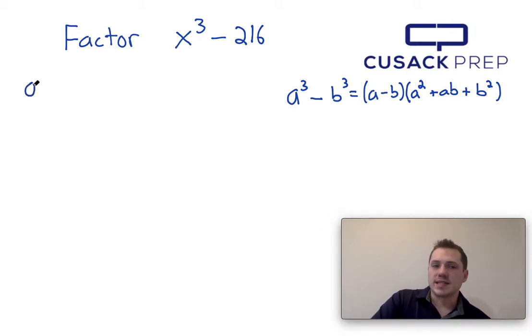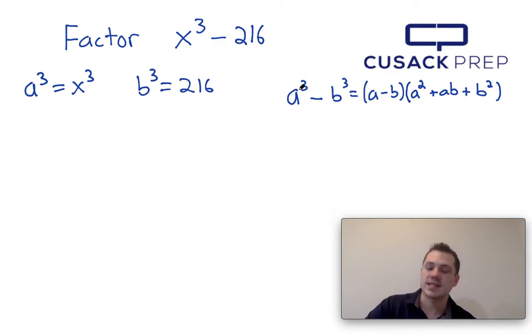So the first thing I have to do is I have to associate a cubed and x cubed and b cubed and 216. Basically comparing this equation to the left hand side of this equation I can see that x cubed and a cubed are in the same position.